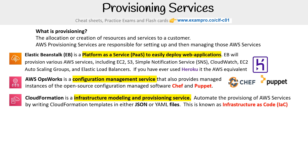Then you have CloudFormation itself. This is an infrastructure modeling and provisioning service that automates the provisioning of AWS services by writing CloudFormation templates in either JSON or YAML. This is known as IaC, or infrastructure as code.